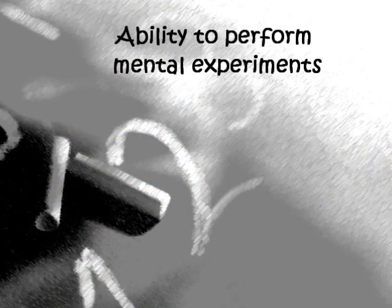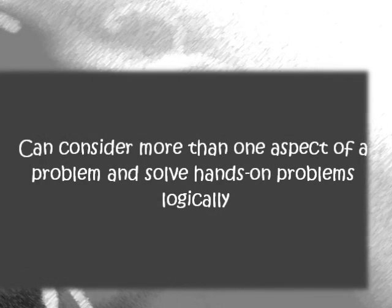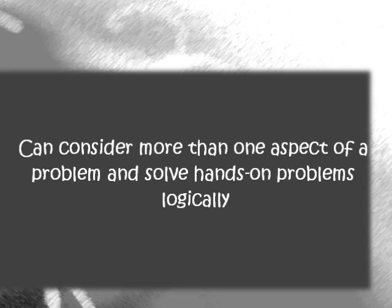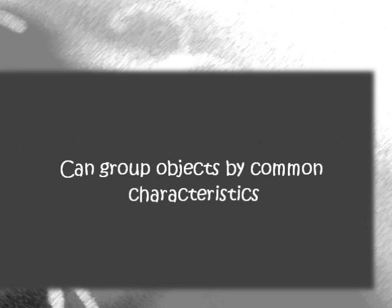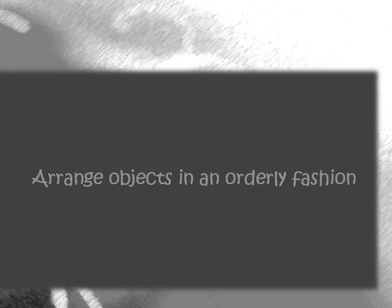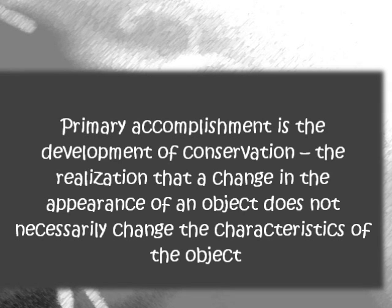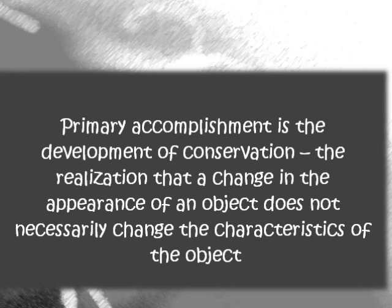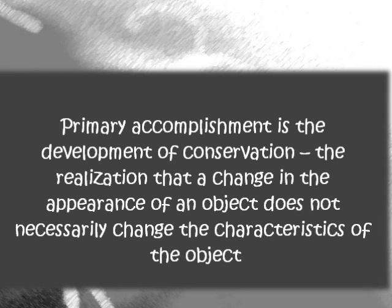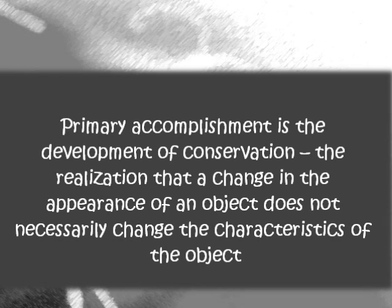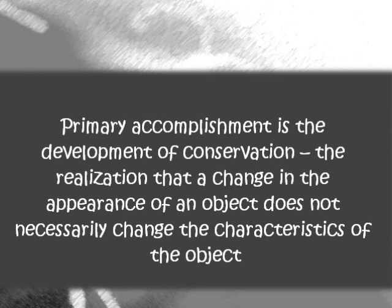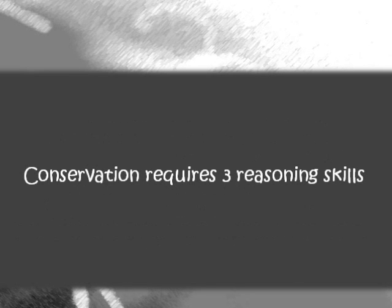During the concrete operational stage, they now have the ability to perform mental experiments. They can consider more than one aspect of a problem and solve hands-on problems logically. They can now group objects by common characteristics and arrange objects in an orderly fashion. The primary accomplishment of this stage is the development of conservation, which is the realization that a change in the appearance of an object does not necessarily change the characteristics of the object. Conservation requires the development of three reasoning skills.